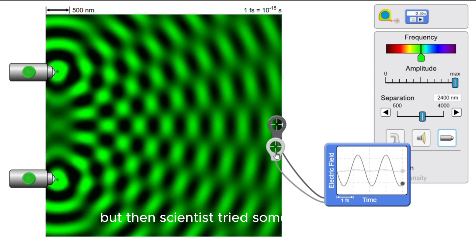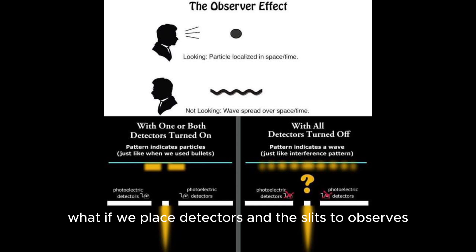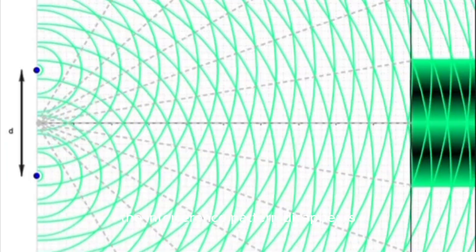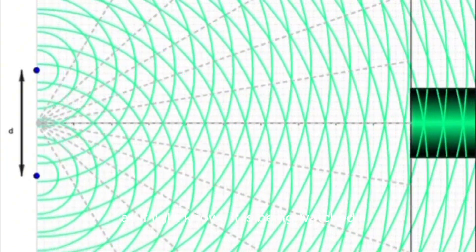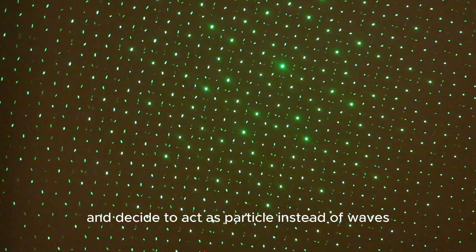But then scientists tried something strange. What if we place detectors at the slits to observe which one light goes through? The moment we do this, the interference pattern disappears, as if light knows it is being watched and decides to act as particles instead of waves.